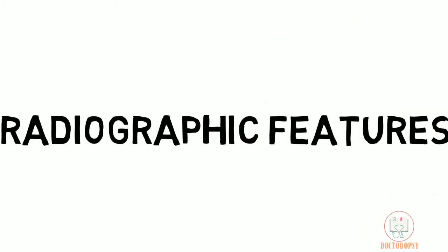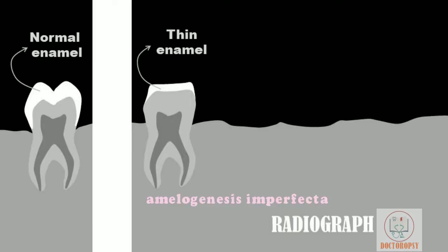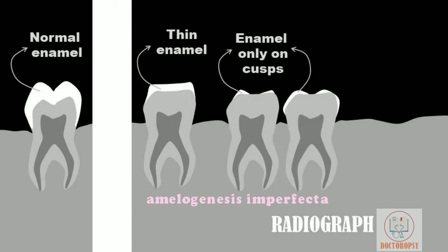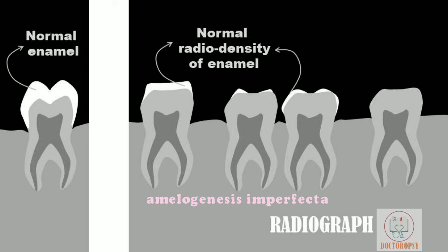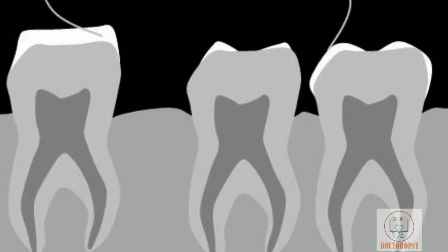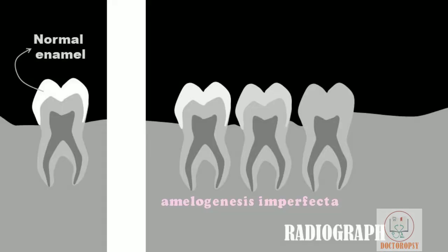The radiographic appearance depends on the type of amelogenesis imperfecta. In hypoplastic type, the formed enamel is not of normal size and shape — it appears thinner, may be seen only on cusp tips, or in severe cases is totally absent. Since calcification is not disturbed, the radio density of the enamel is normal, therefore showing normal contrast with the underlying dentine.